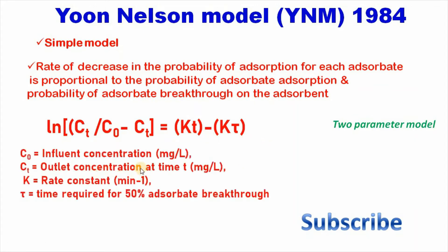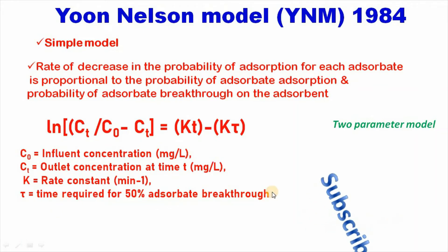Where C0 is the influent concentration, Ct is the outlet concentration at time t, K is the rate constant, and tau is the time required for 50% adsorbate breakthrough.